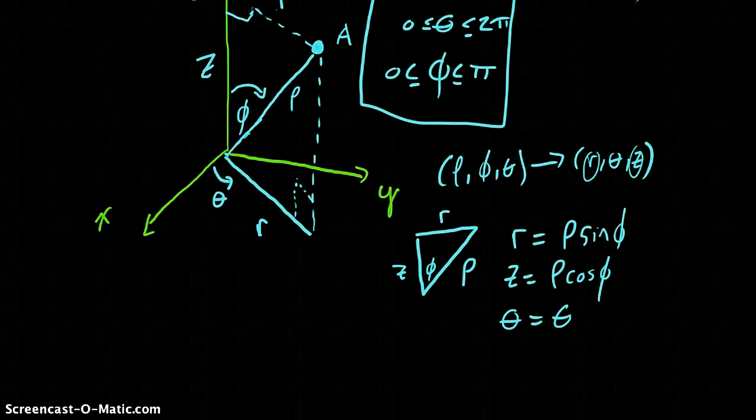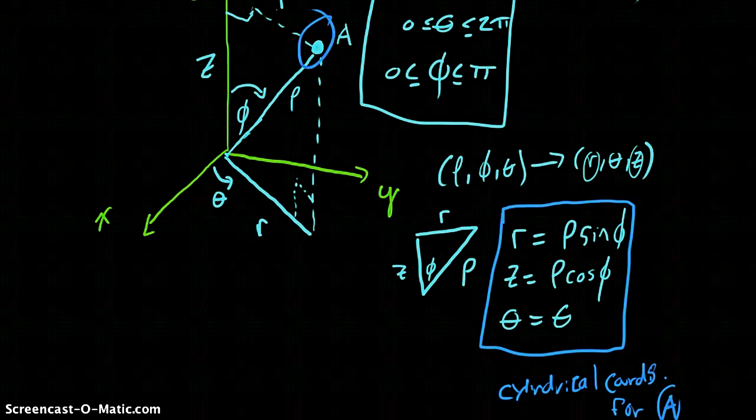I can say that theta was shared. And now I'm going to circle this and I'm going to say that I just found the cylindrical coordinates for A. A is my point. A is this point up here.